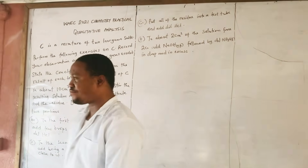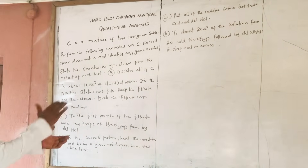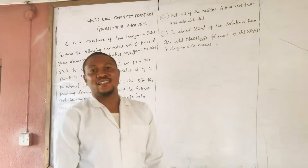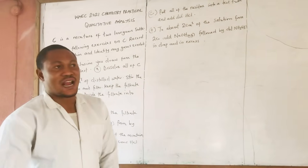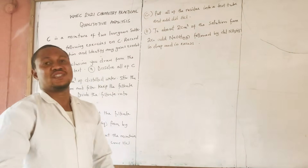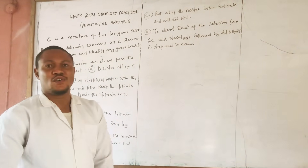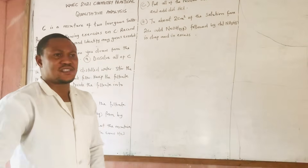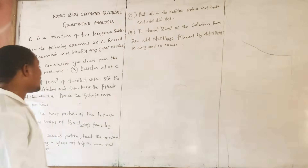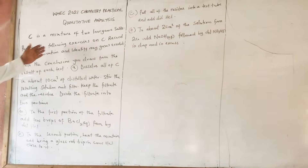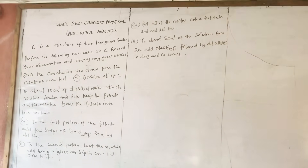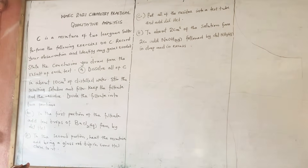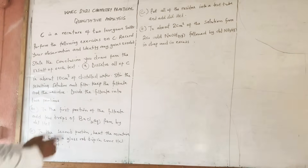Today we are going to be looking at question number 2 for the WAEC 2021 Chemistry Practical — that's the qualitative analysis. I said in my previous video, I'm not saying this is the exact thing that will come out, but I can assure you that 75% of what has been taught on this channel is going to come out. Please watch this video to the end and follow those processes step by step so that you will actually understand.